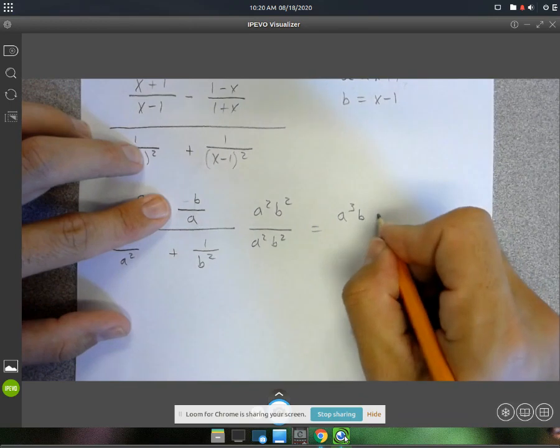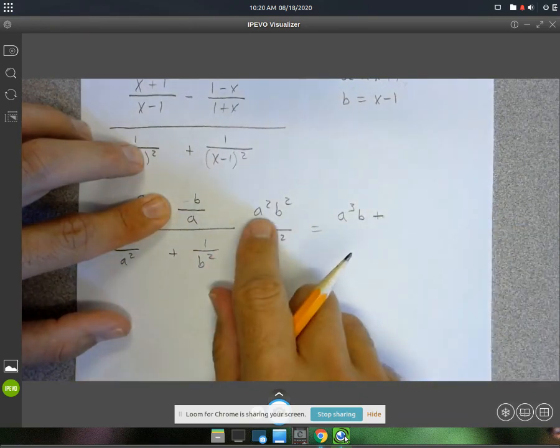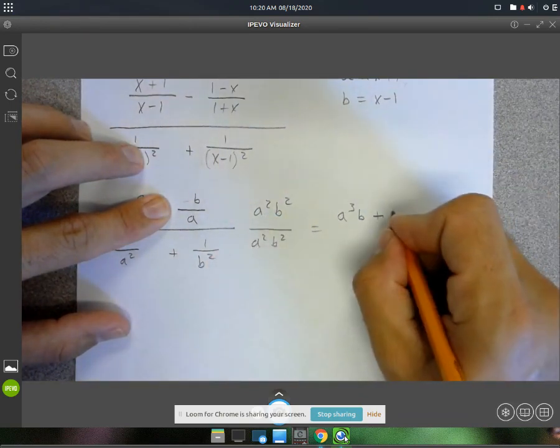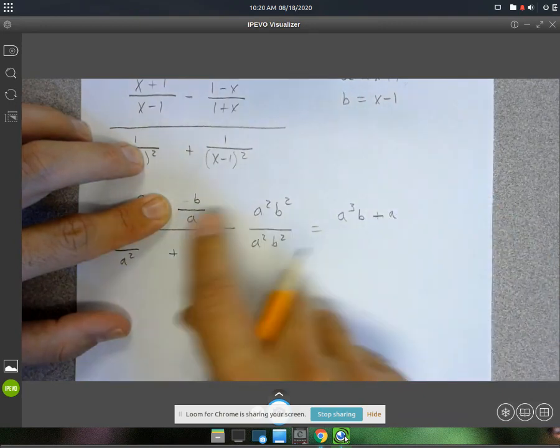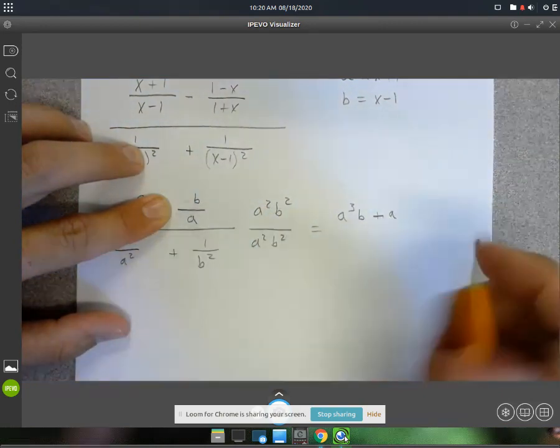And then here, really similar, we'll have a to the first power, because one of those a's canceled. And then b to the third power.